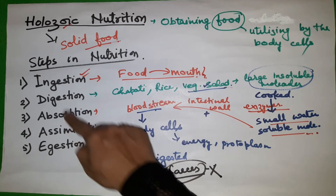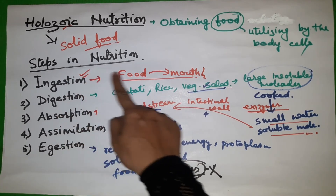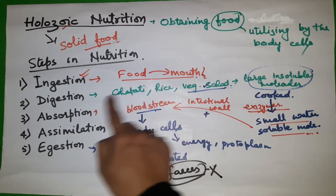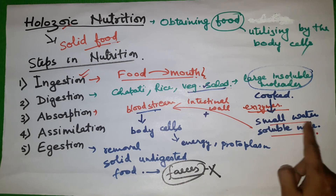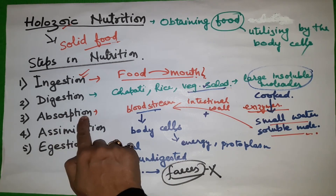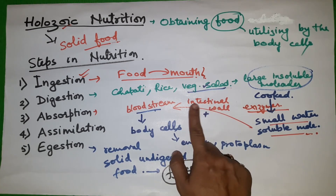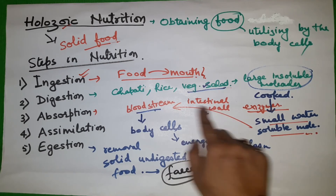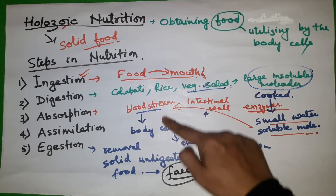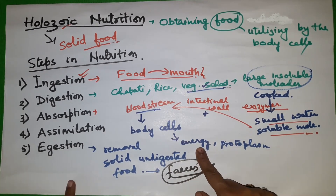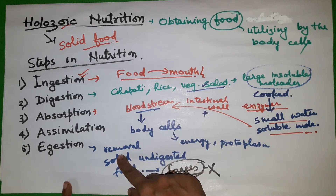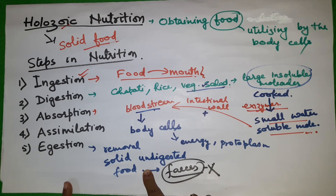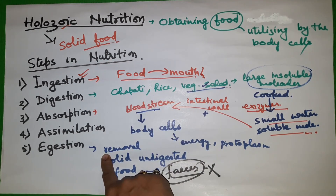To summarize: ingestion is taking food into the mouth; digestion is breaking down large insoluble molecules into small water-soluble molecules by enzymes; absorption is when nutrients are absorbed into the bloodstream through the intestinal wall; assimilation is when body cells utilize those nutrients for energy and new cell formation; and egestion is the removal of solid undigested food as feces from the body. These are the five steps in nutrition.